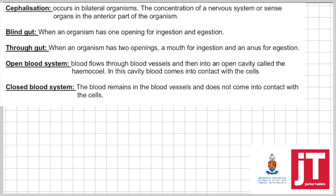The last two definitions: an open blood system is where blood flows through the blood vessels and then flows into an open cavity called the haemocele. From this cavity, the blood will actually come into contact with the cells. That is what an open blood system is. In a closed blood system, the blood remains in the blood vessels and does not come into contact with the cells.